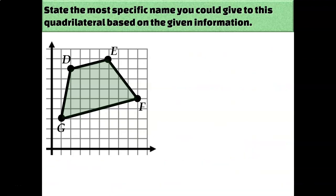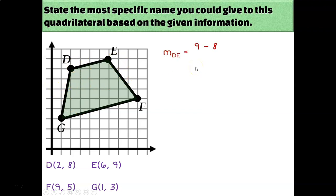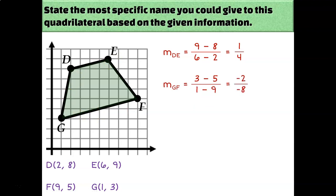Let's try another one. It looks like a trapezoid. To figure that out for sure, we need the coordinates and we need to prove it has only one pair of opposite parallel sides. The slope of DE ends up being 1/4 — you can get that with the formula or by counting up 1 and right 4. For GF, I get −2/−8, which simplifies to 1/4 as well. So I have at least one pair of opposite sides that is parallel.